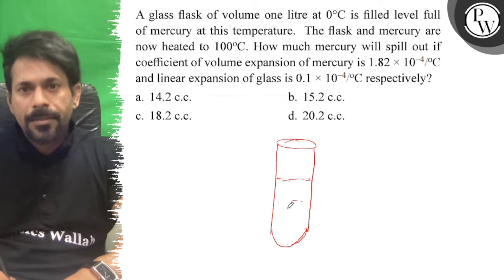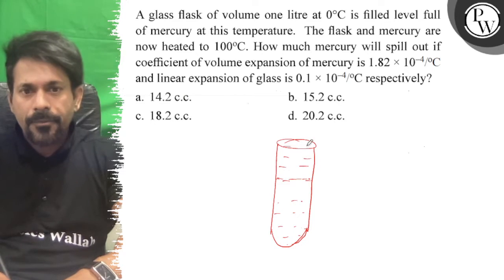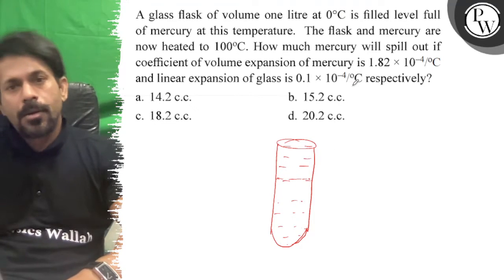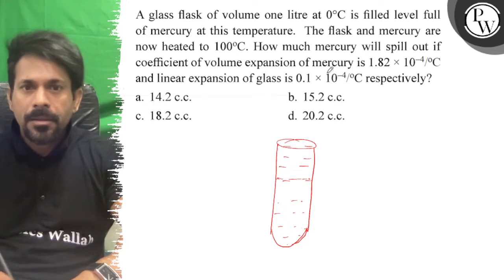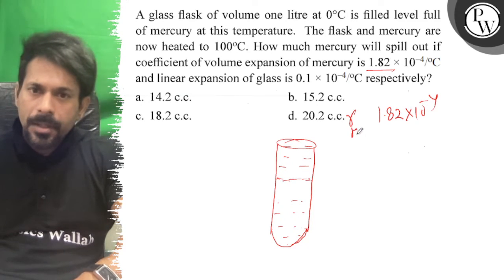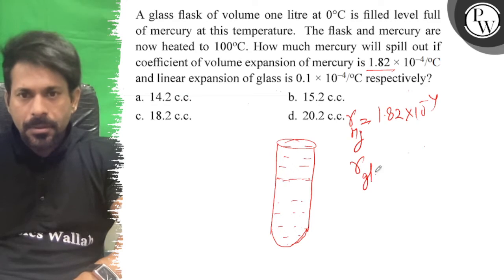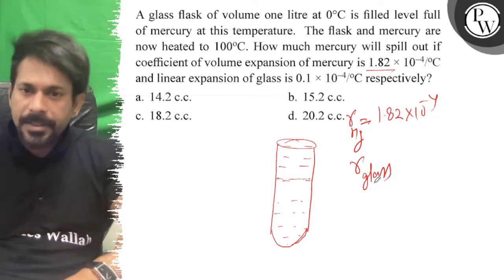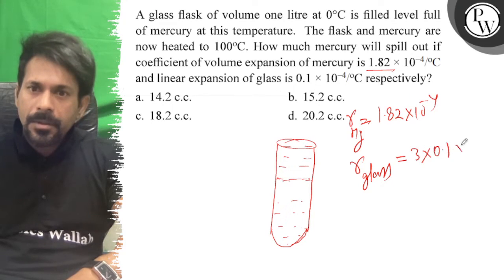Mercury volume expansion. How much will the mercury spill? Gamma of mercury is 1.82 × 10^-4. This is gamma of Hg. And gamma of glass, which will expand the volume of glass, will be 3 times the linear expansion, which is 0.1 × 10^-4.